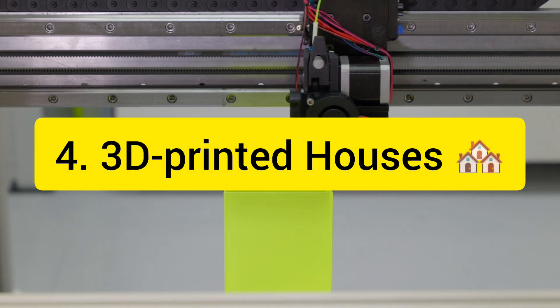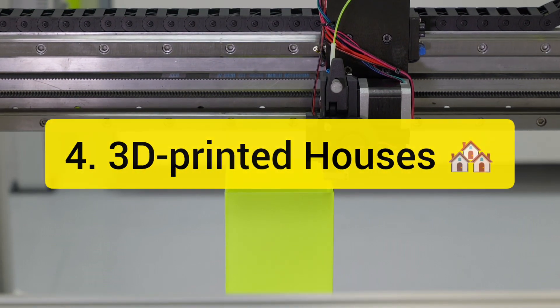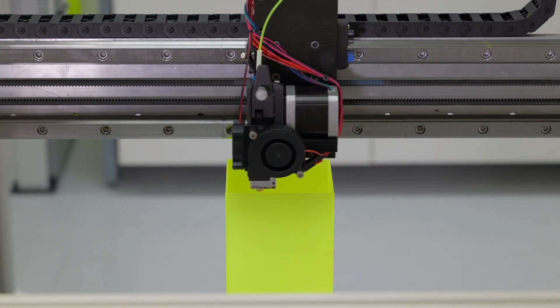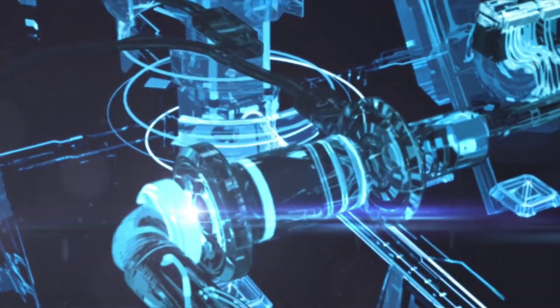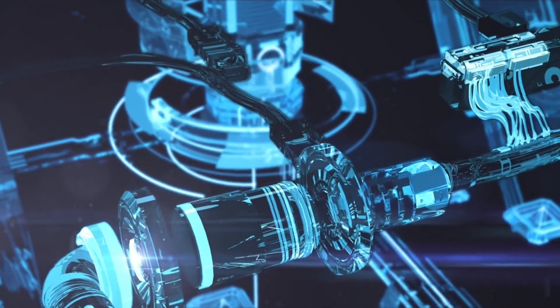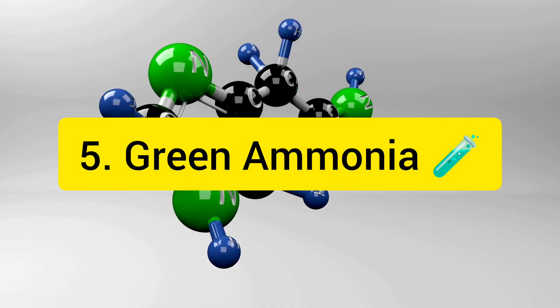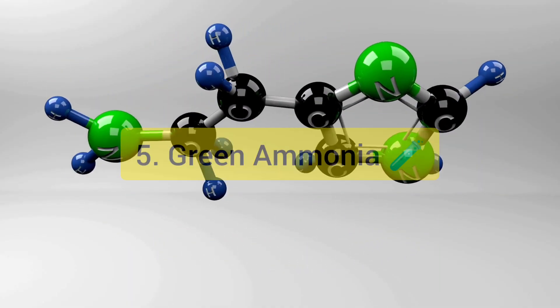Four: 3D-printed houses. These are houses built using robotic arms and large-scale printers that can deposit layers of concrete, plastic, or other materials, creating customized and affordable structures. Five: Green ammonia, a carbon-free fuel.